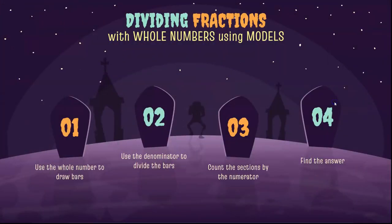So we use the whole number to draw the bars first. We use the denominator to divide the bars. We count the sections by the numerator and then of course we find our answer.